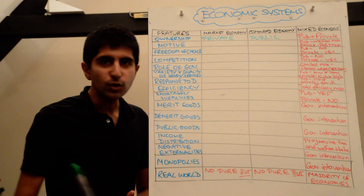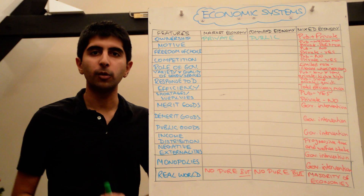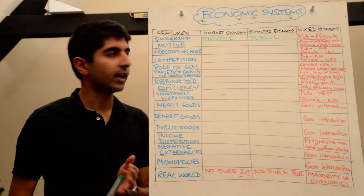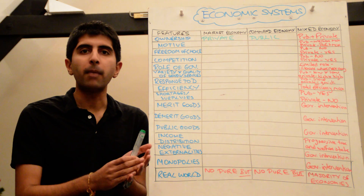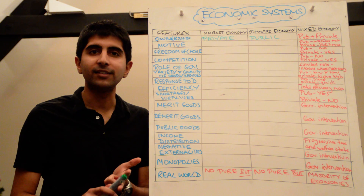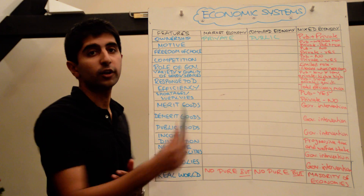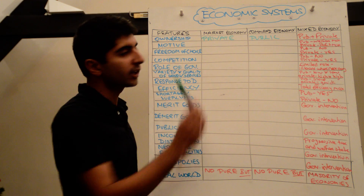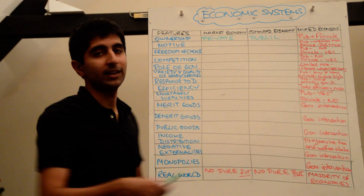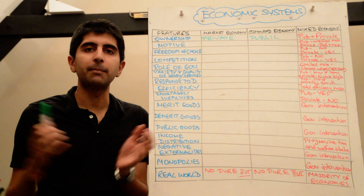What I've done here is drawn a huge table of lots of different features that can occur in economies, and then we have to look at each economic system to see how each system will deal with some of these features. The systems I'm going to consider are: a market economy, where markets are left to run free — you might have also heard of capitalism, laissez-faire approaches, or liberalism, which all mean the same thing. We're also going to look at command economies — centrally planned economies, socialism — that all means basically command economies. And we're also going to consider mixed economies, which is a mix of market and command-based approaches.